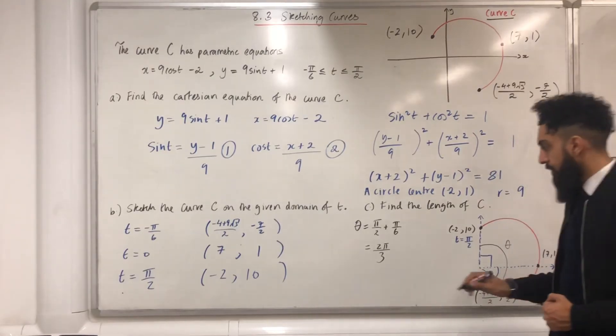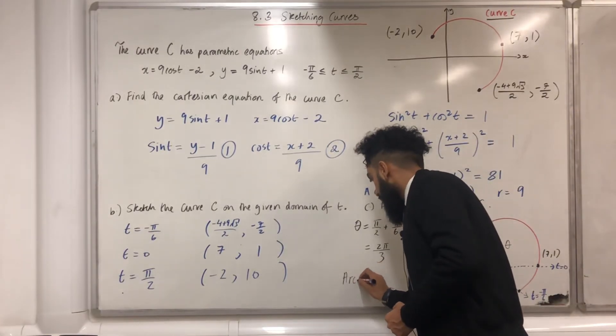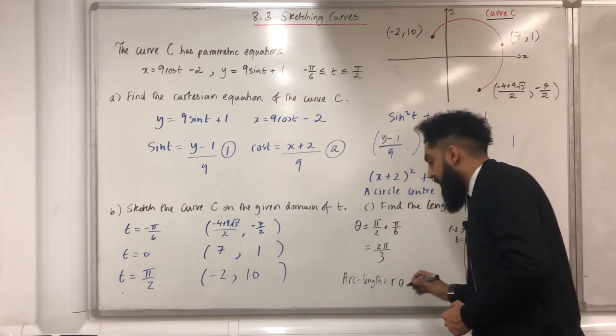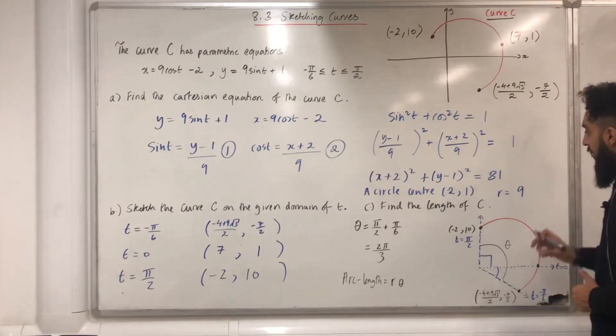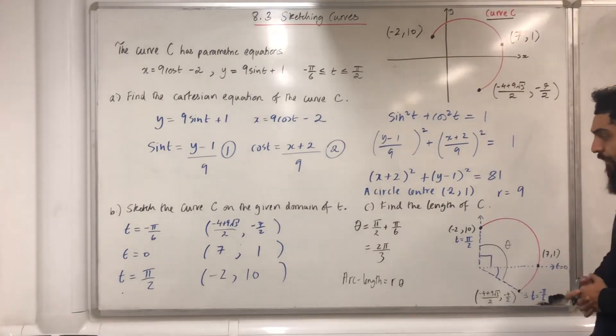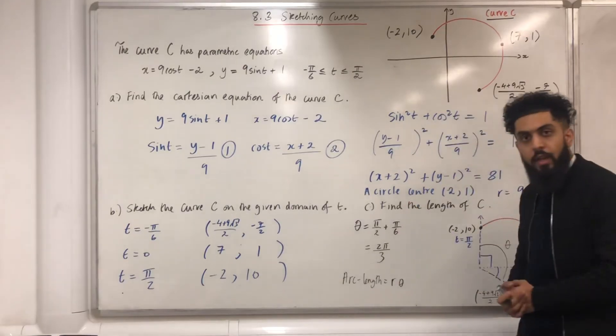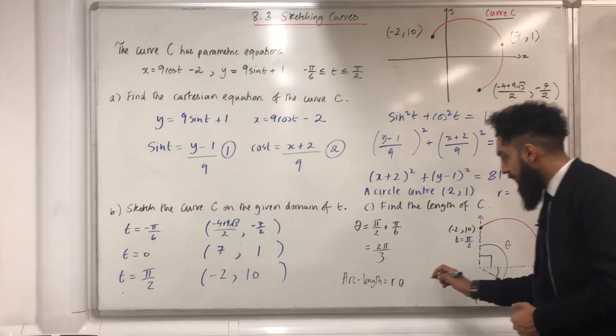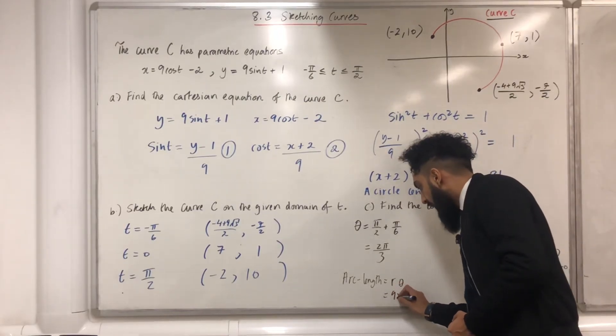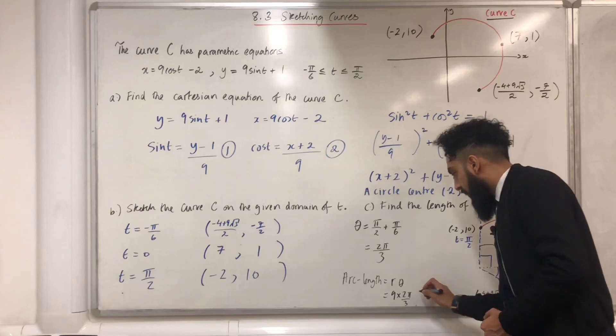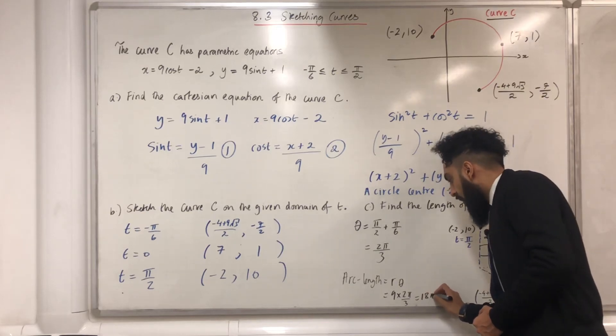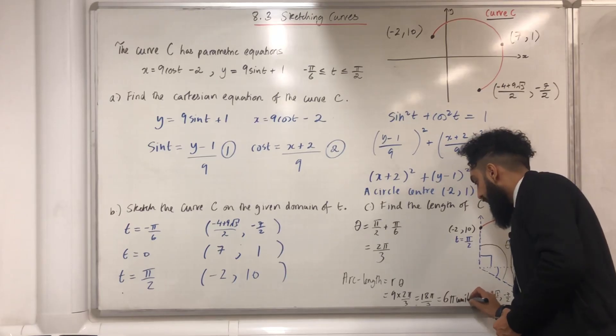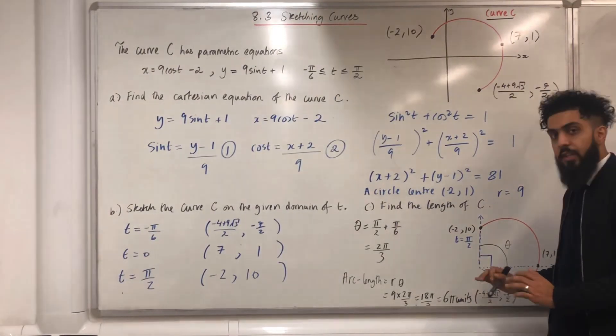Now to find the arc length, I just need to use the formula radius times theta. I know what the radius is, it is just 9, and I know what theta is, it is just 2 pi over 3. So I plug these values into the arc length formula, and if I do this, I obtain 9 times 2 pi over 3, which is 18 pi over 3, and that there is just 6 pi units. So the length of C is just 6 pi units.